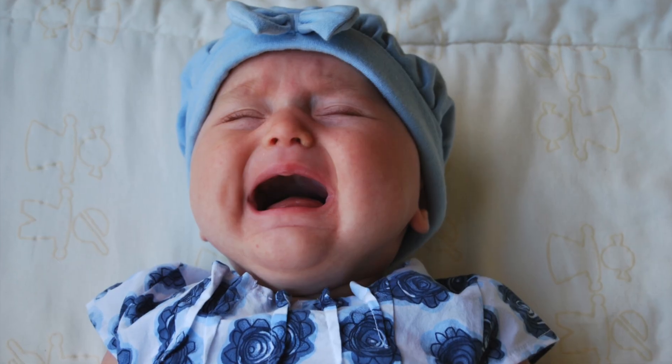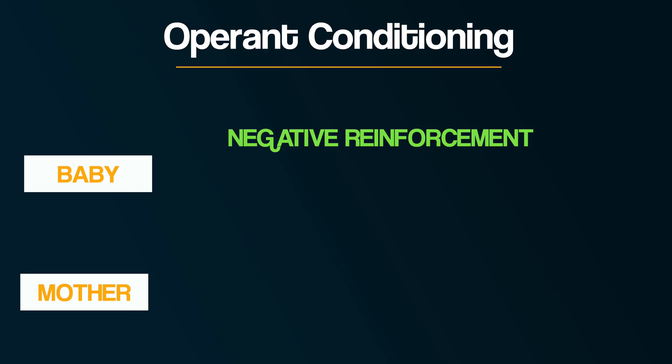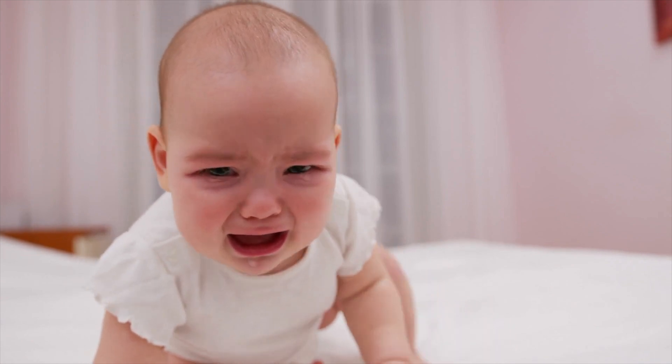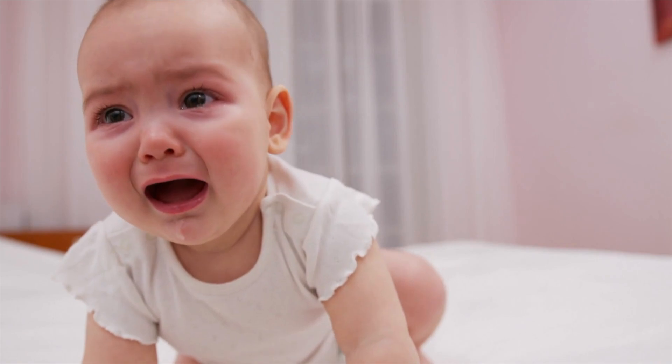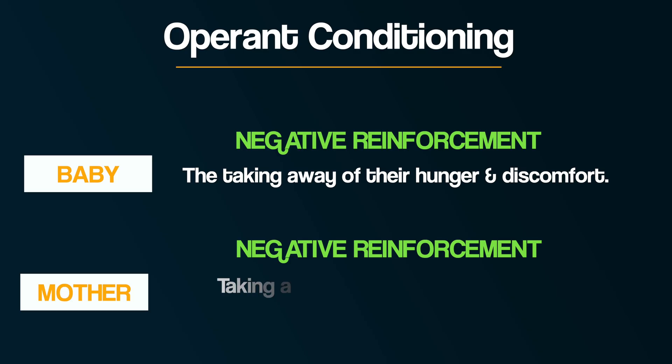In terms of negative reinforcement for the baby, this comes in the taking away of their hunger and discomfort. When an infant feels hungry, they cry. And when the caregiver feeds them, they experience relief from their hunger. Over time, the infant learns that the caregiver can bring relief from hunger and begins to form an attachment to them. Negative reinforcement for the caregiver is experienced differently — a mother can take away the negative experience of crying by feeding the baby, and the removal of this uncomfortable sound through feeding reinforces the behaviour and strengthens the attachment.